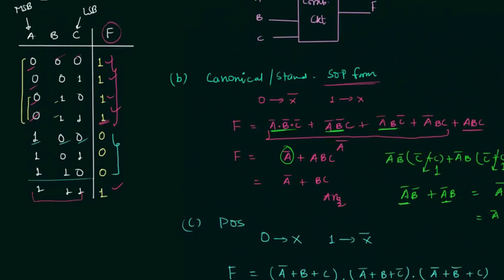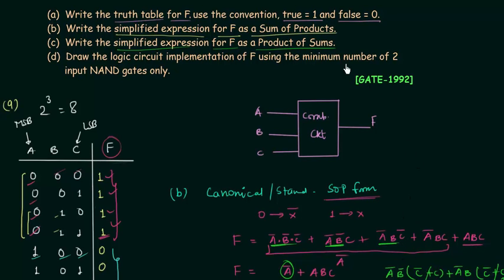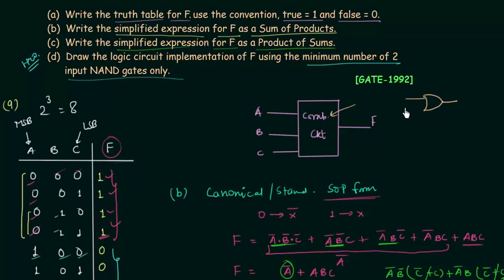The D part says we have to represent the logic circuit using the minimum number of two-input NAND gates — this is the homework problem. Inside the box we have one two-input OR gate, one NOT gate for A complement, and one AND gate with inputs B and C. So the circuit implements F = A complement OR (B AND C).